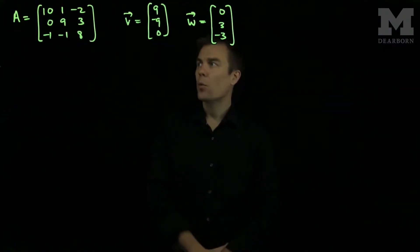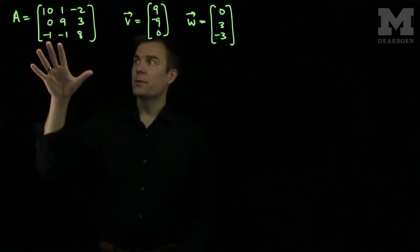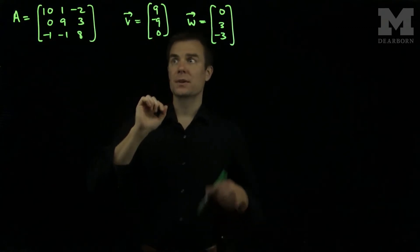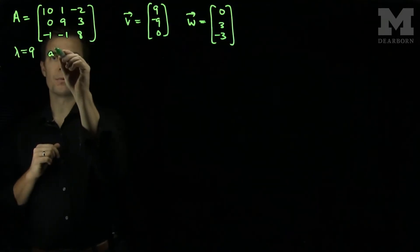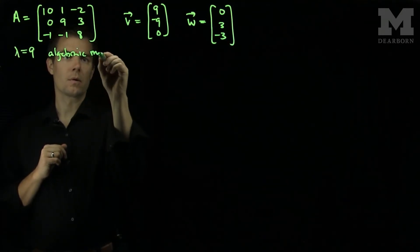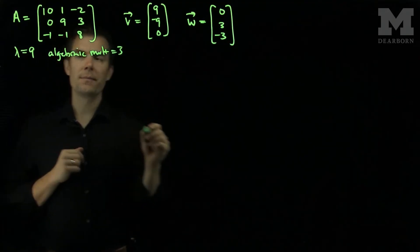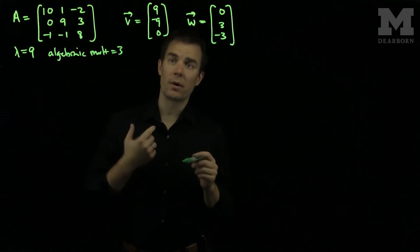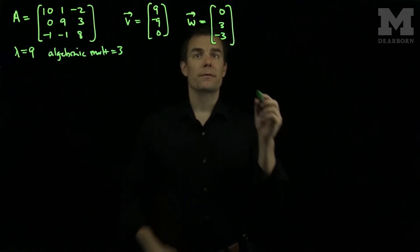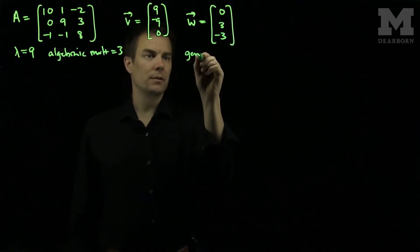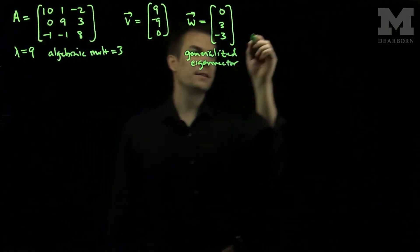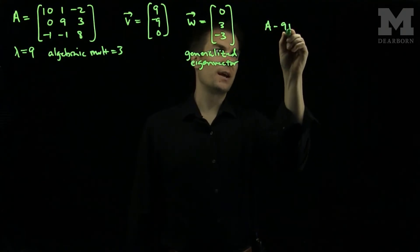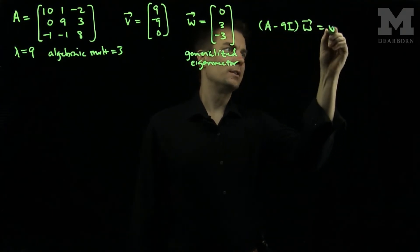Welcome back students. We will continue our discussion of finding the Jordan canonical form of A. What we have found so far is that for the matrix A, we have an eigenvector v corresponding to lambda equals 9, which is the only eigenvalue. The algebraic multiplicity was 3 and the geometric multiplicity is equal to 1. w is the first generalized eigenvector, satisfying A minus lambda times the identity applied to w equals v.